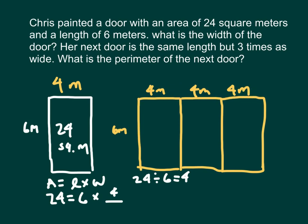1, 2, 3 times as wide, where that's 3 times the 4 meters does equal 12 meters. We got this 3 times as wide.